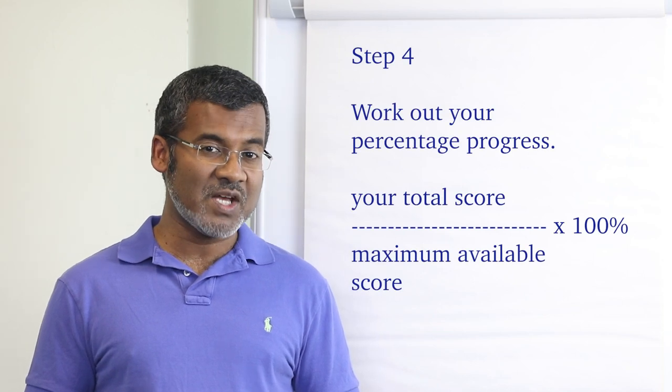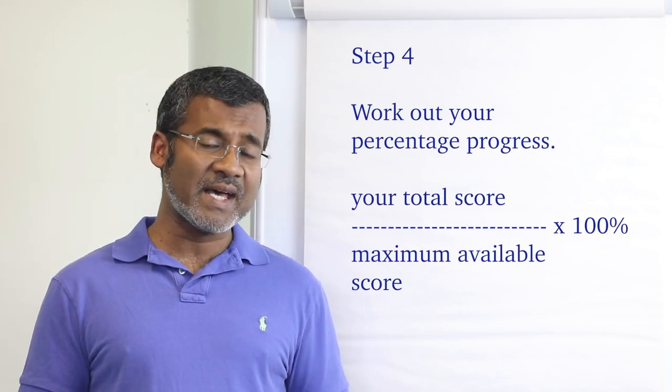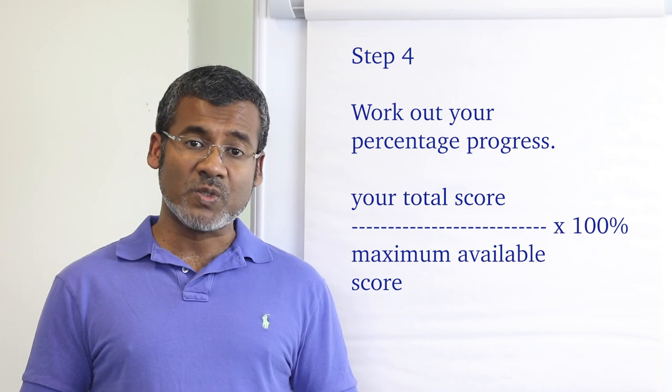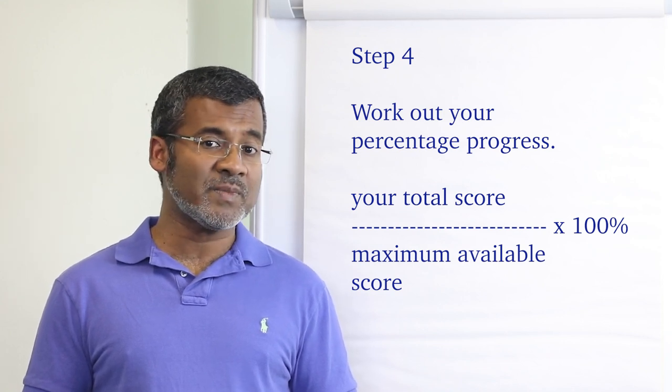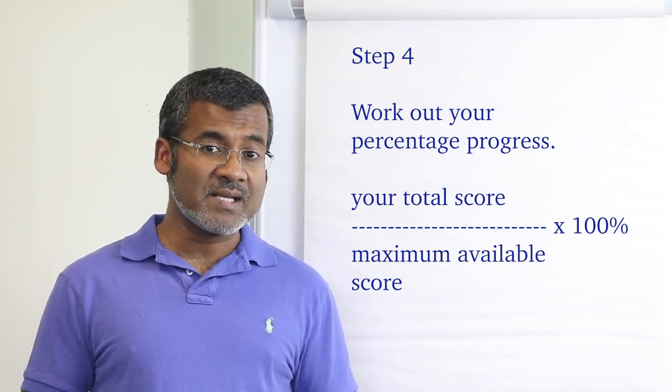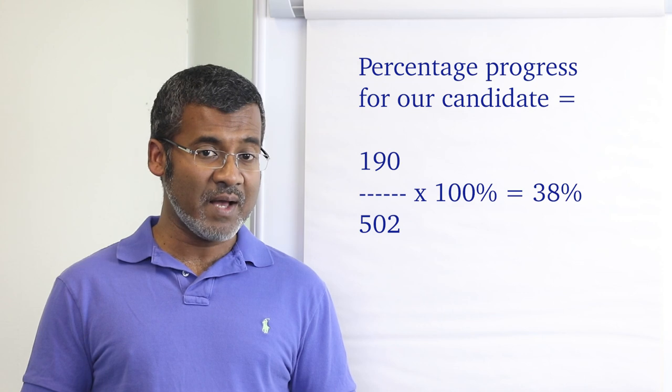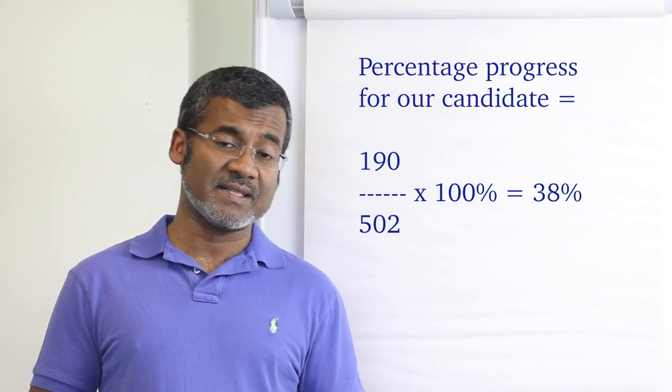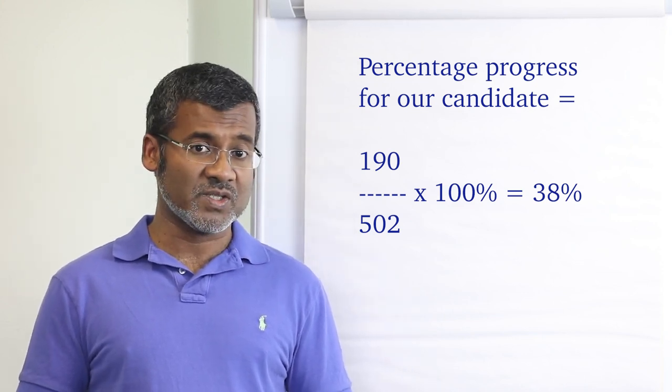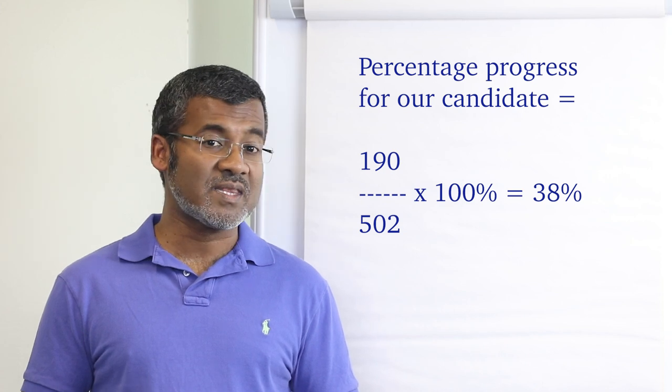Step number four. Work out your percentage progress. For that, you simply divide your total score by the maximum available score and then times it by 100 to get a percentage. The MRCOG part two syllabus checklist currently has 502 items in it. So the percentage progress for our candidate will be 190 over 502 times 100, which is 38%. Not halfway there, but 38% there.